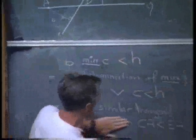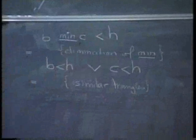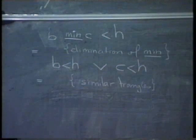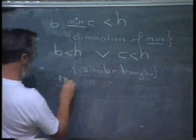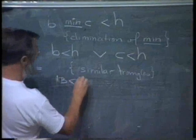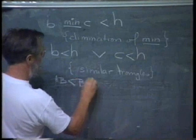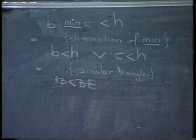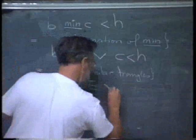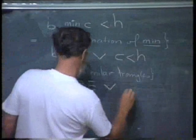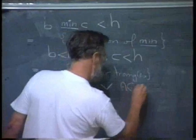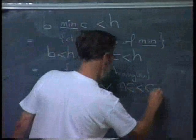Only now it becomes a little bit different here. Because B less than H is now AB less than BE. Similarly, C less than H will be that AC less than CE.